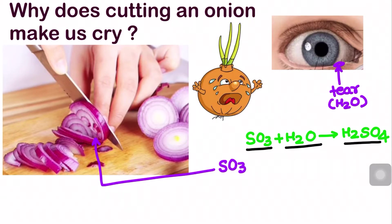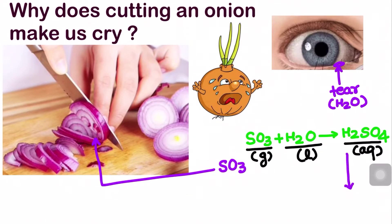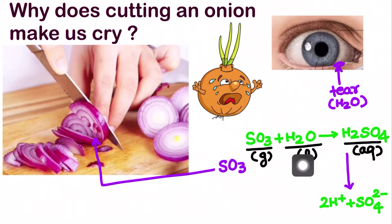SO3 is a gas, H2O is a liquid, and we get aqueous H2SO4. After that, H2SO4, since it is a strong acid, will dissociate into 2H⁺ and SO4²⁻. This is the overall reaction that will occur.